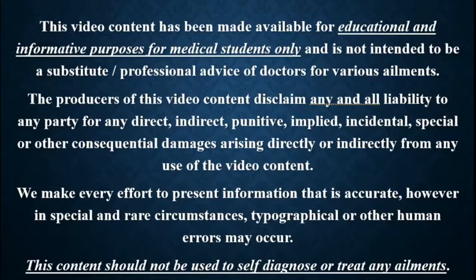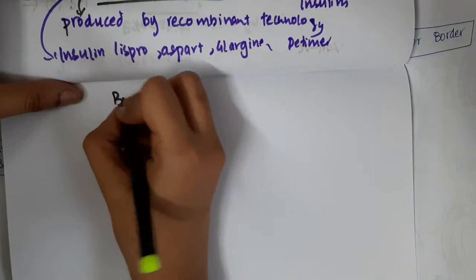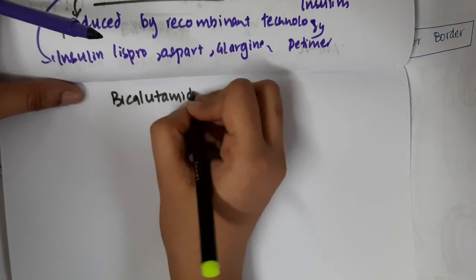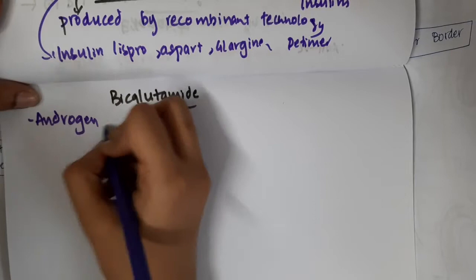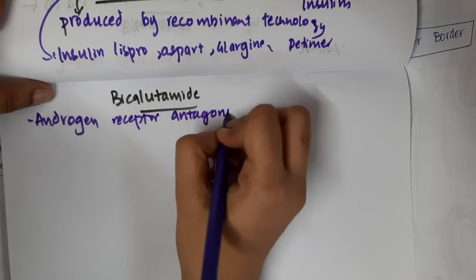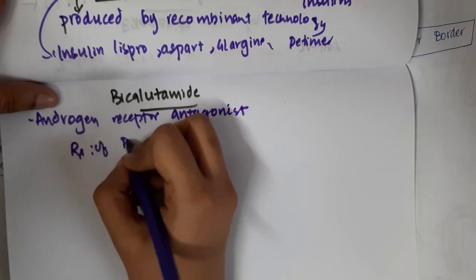Hello friends, welcome to Creative Medicine. In this lecture, we will learn some important points about bicalutamide. Bicalutamide is an androgen receptor antagonist. It is used in the treatment of prostate cancer and hirsutism.